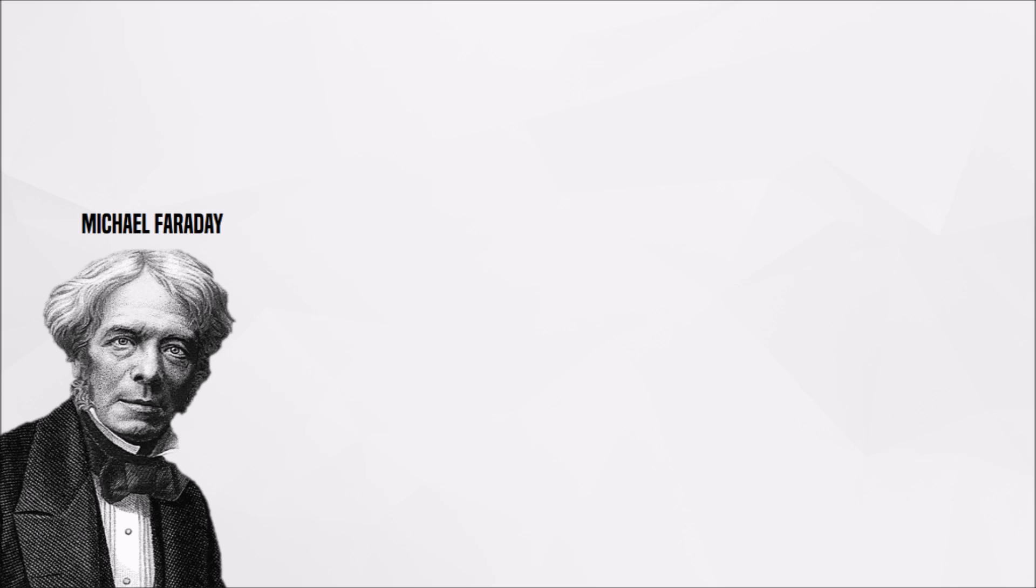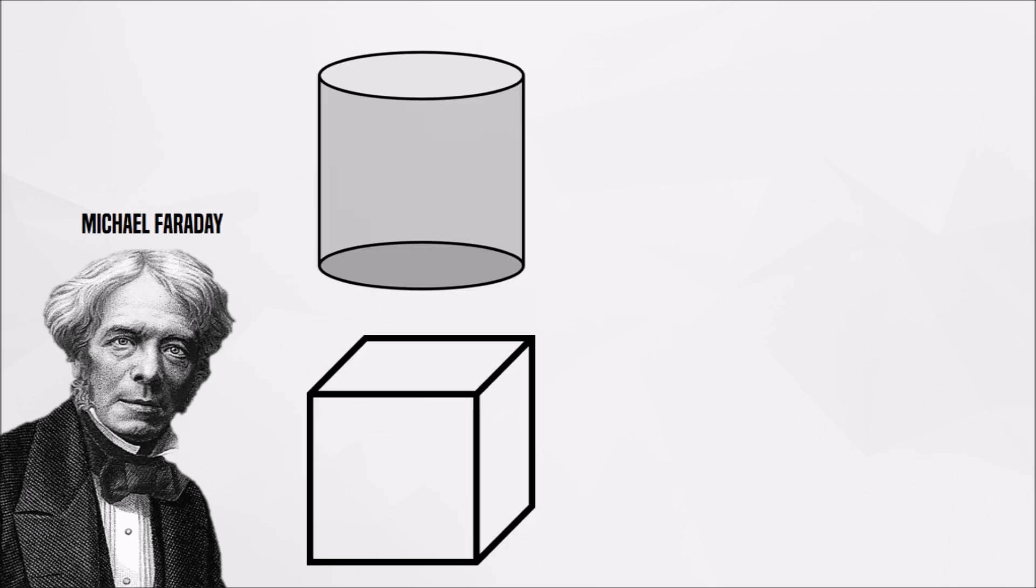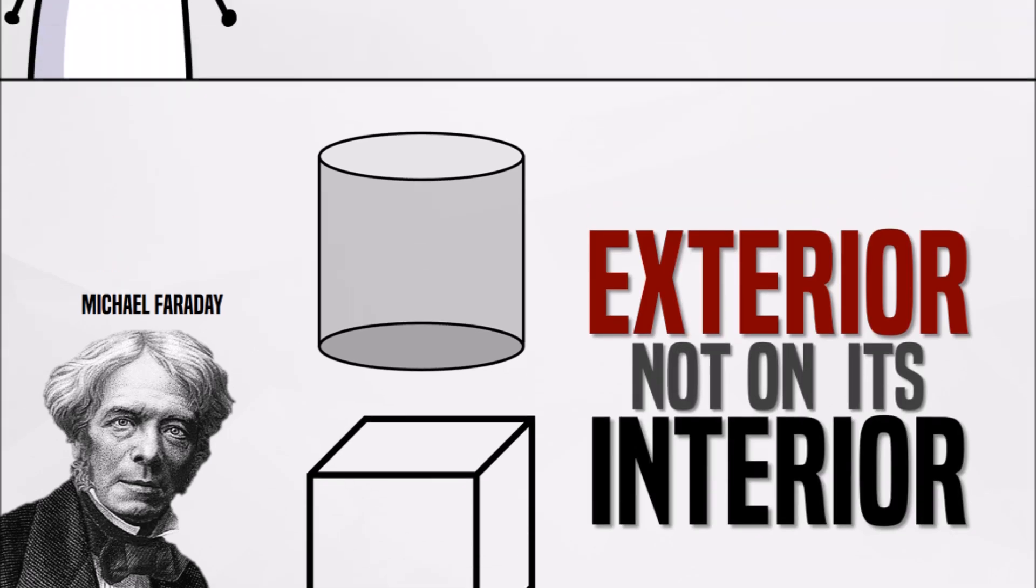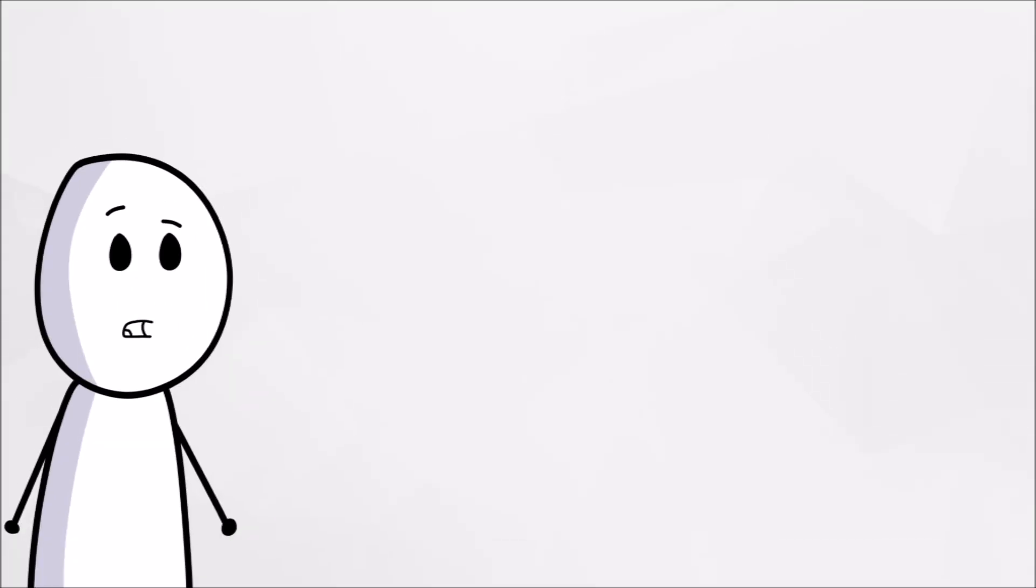When charged, an electrical conductor, like Franklin's can or a metal cage, would display that charge only on its exterior, not on its interior. To further test this observation, Faraday conducted an experiment similar to Franklin's.